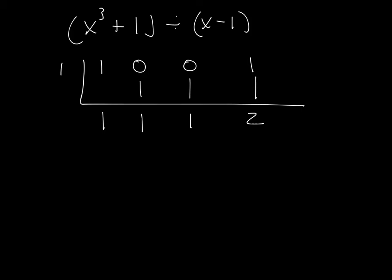And that's it. The answer to this problem, remember this is the remainder. So this is the number, the constant. This is the x. This is the x squared. It was x cubed. We're dividing by a first power. That's going to shrink the power down to squared. So final answer is x squared plus x plus 1 plus 2 over x minus 1.